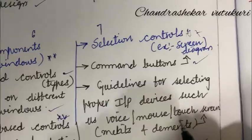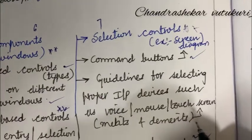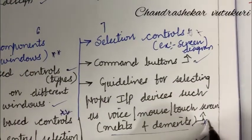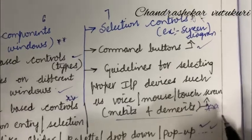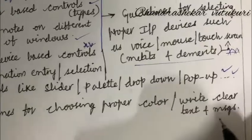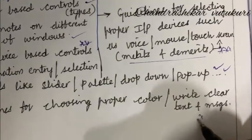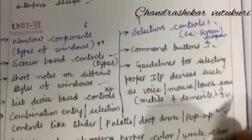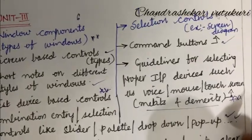Guidelines for selecting proper input device such as voice, mouse, touch screen and their merits and demerits is one of the topmost questions which may occur in 7. I am going to give you one more important question. It is all about the guidelines for choosing proper color. Write a clear text and message also. These are the very important questions for the course human-computer interaction for question number 6 and 7.